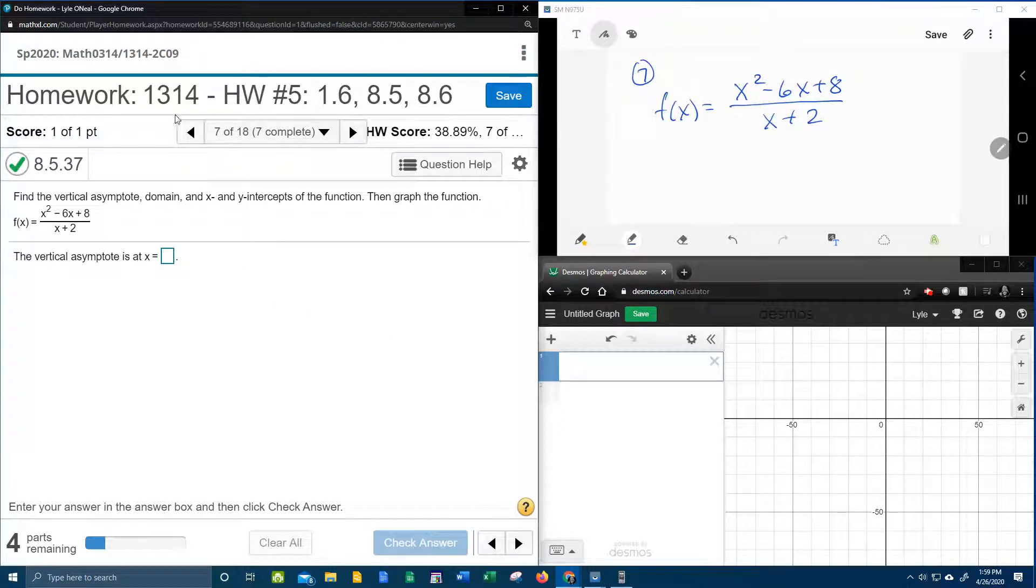Alright here we go, question number 7 in our college algebra homework number 5 in my lab math. It says find the vertical asymptote, the domain, x and y intercepts, then graph. That's like 4 things, 1, 2, 3, 4. Let's get started.